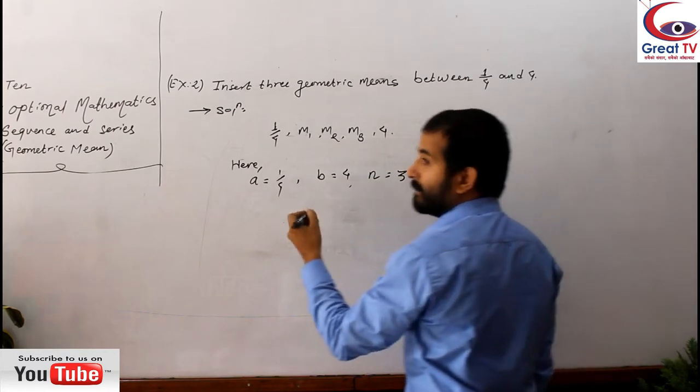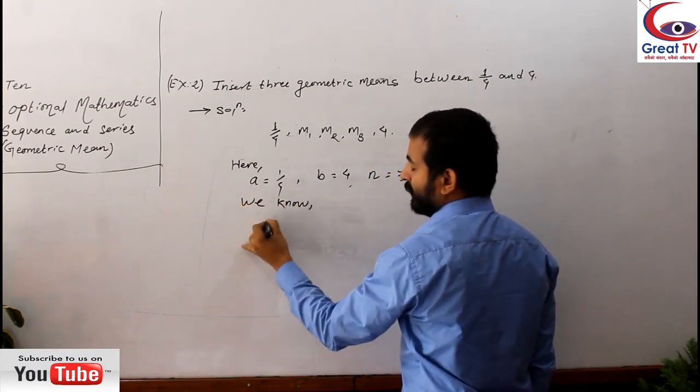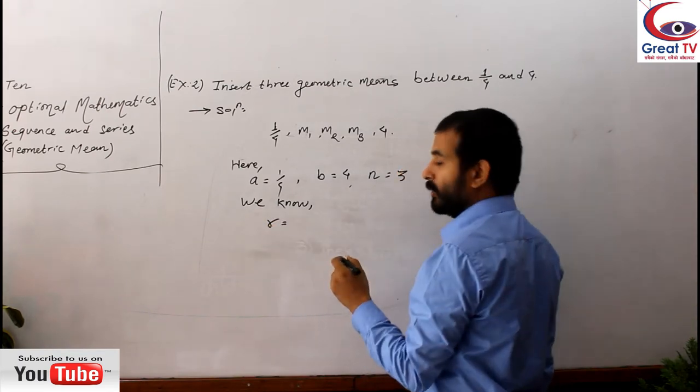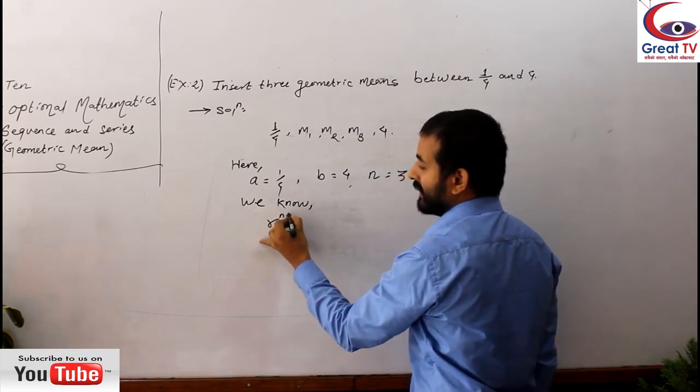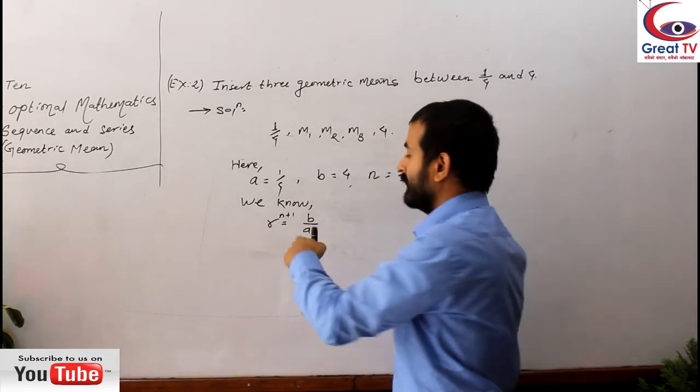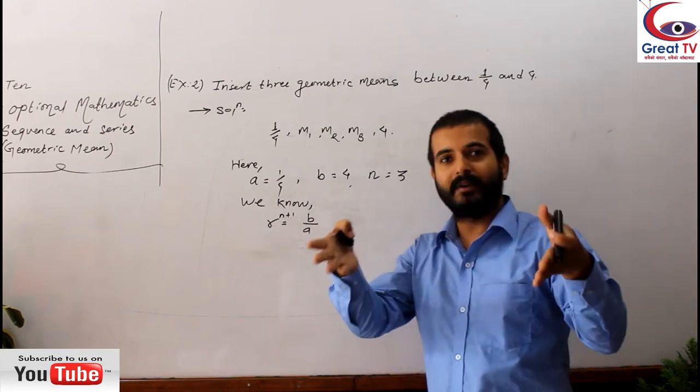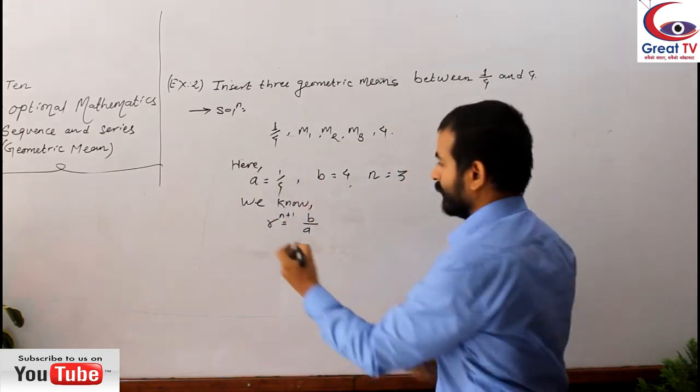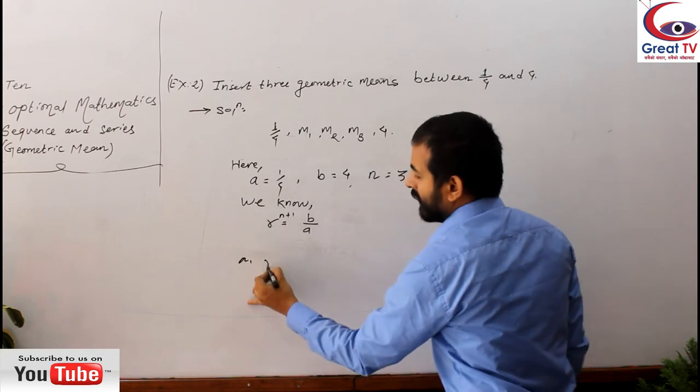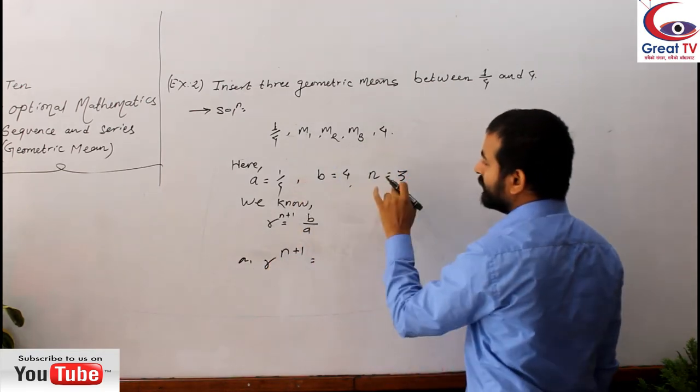Now we can find out R by E. We know, to know the common ratio R, we have one formula by the strength: R^(N+1) equals to B by A. If you have remembered in my last class there was given the formula to find out R when you have to calculate multiple means. So R^(N+1), so B means - can you see here B? It is the last number 4.